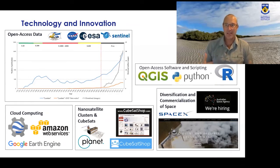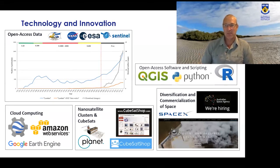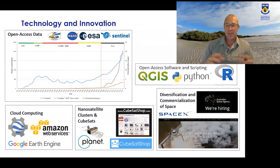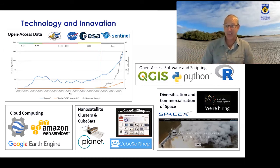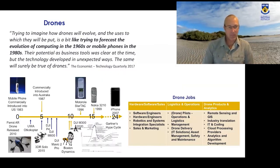Within Australia, the Australian Space Agency has been established in the last couple of years, really looking at building sovereign space capability. This is being repeated right across the world, through dedicated space agencies and the diversification, commercialization, and openness of data — allowing people across both the developed and developing world to access huge amounts of spatial data, something that continues to change dramatically.